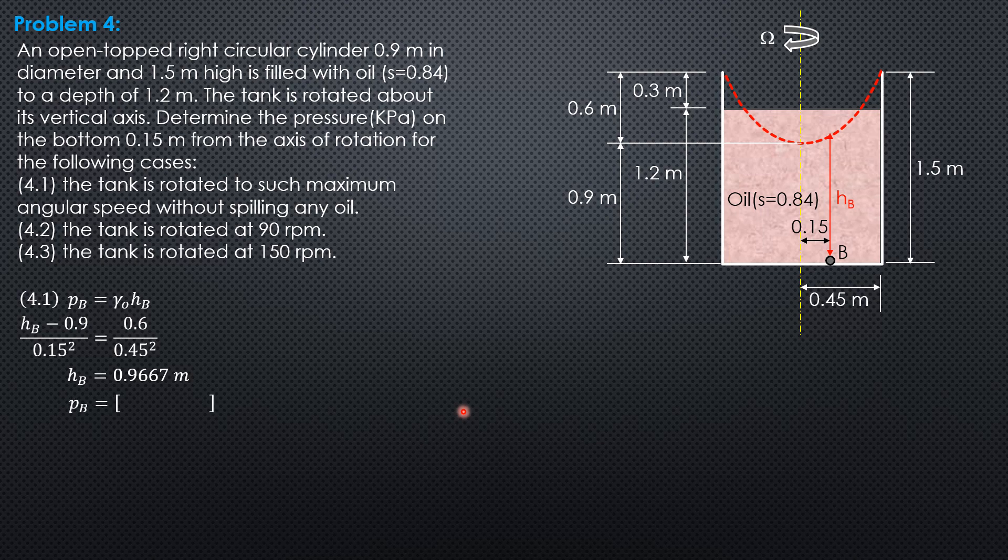Therefore, the pressure at B is 0.84 times 9.81 gamma of oil times 0.9667. So pressure at B is 7.966 kilopascals.